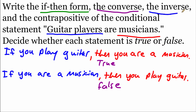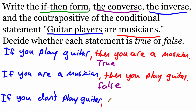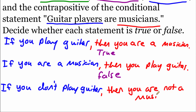Next we write out the inverse. For the inverse, we take the original if-then statement and negate both the hypothesis and the conclusion — adding a couple of 'nots.' So the inverse says: if you don't play guitar, then you are not a musician. Is this true or false? If you don't play guitar, does that automatically make you not a musician? This is also false — there are a bunch of different instruments you could play and still be a musician.